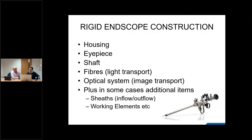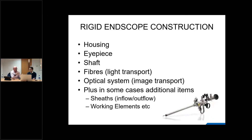Additional items make up a complete scope system. A resectoscope, for example, is made up of a telescope, a working element with a loop electrode, and two sheaths — an inflow sheath and an outflow sheath — that provide fluid for visualization. It's a bit of a misnomer when you say 'endoscope' — some people term it a telescope, some term it the total assembly — so it's slightly complicated from a terminology perspective.